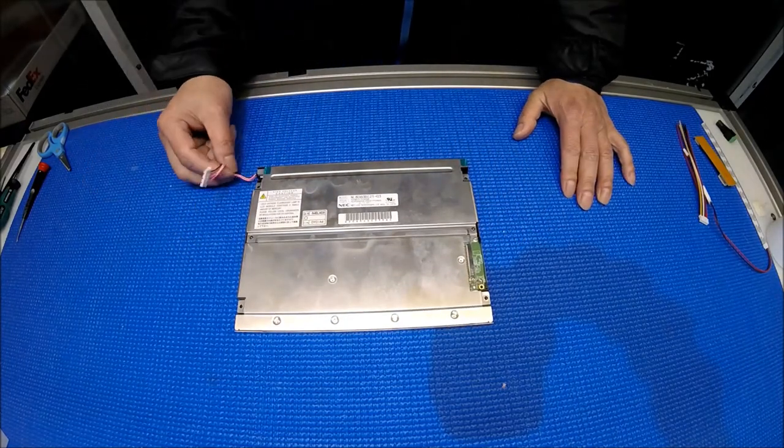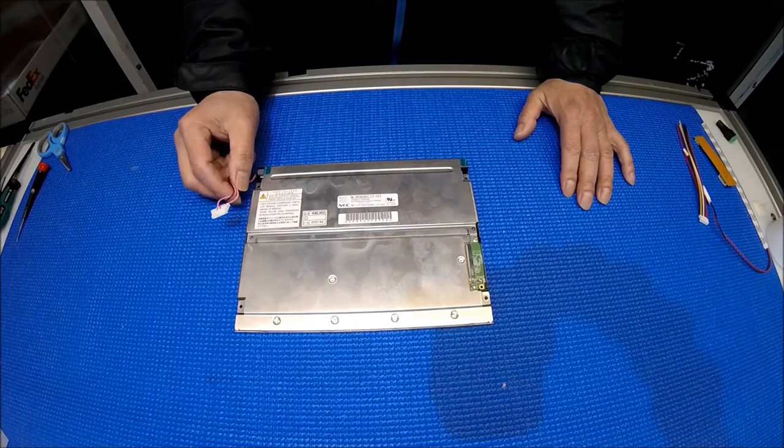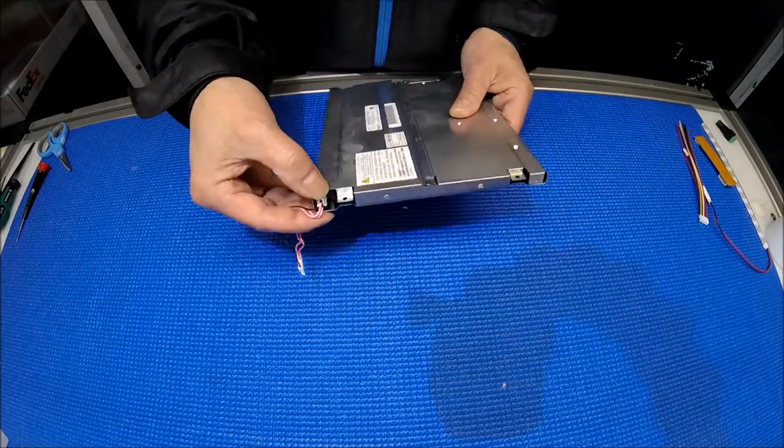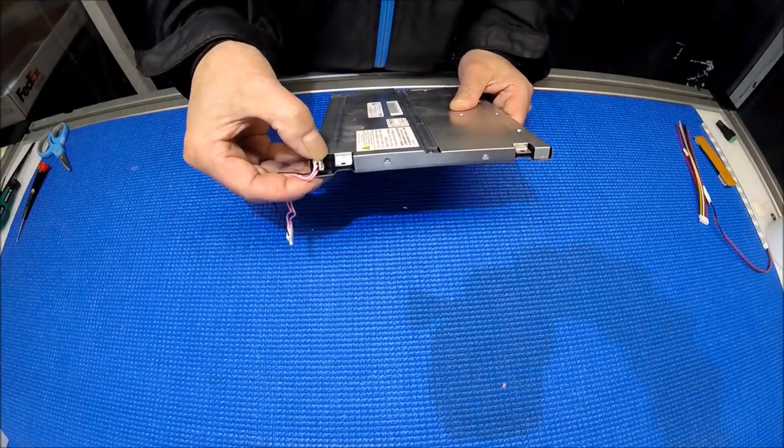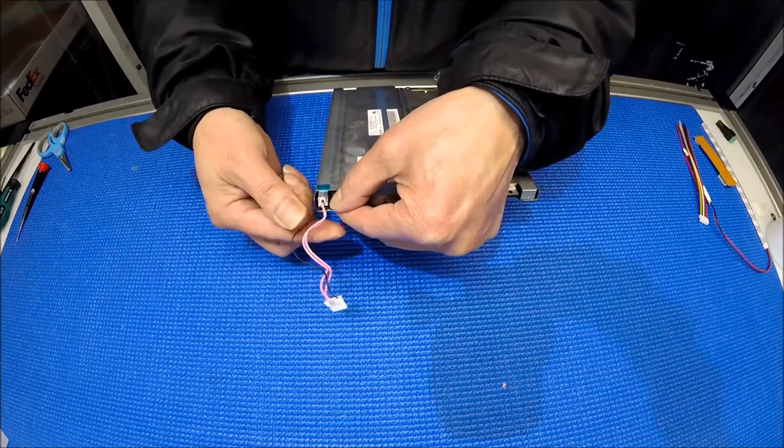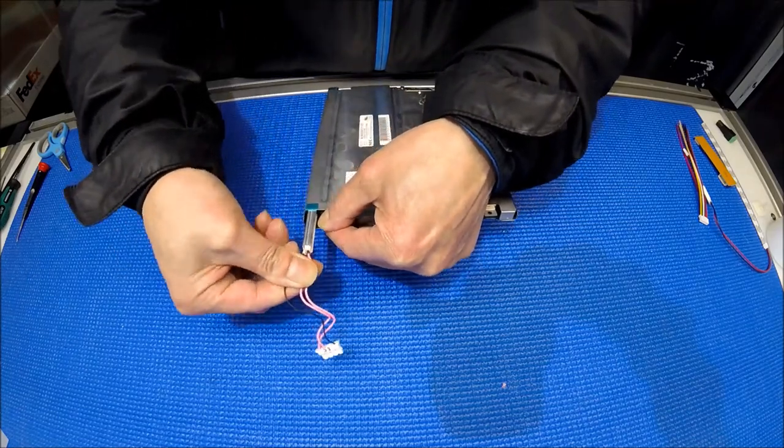In order to upgrade from the 2 CCFL to our UB54 series LED kit, it's extremely simple. You see this plastic clip—you push it down, then grab the wire and just pull it out. See this?